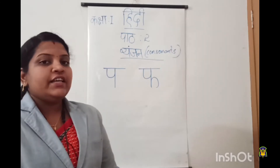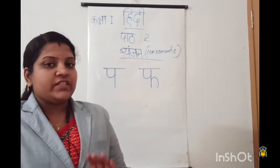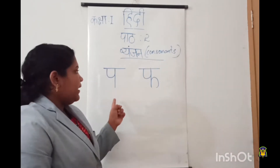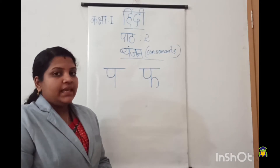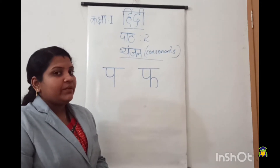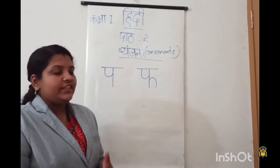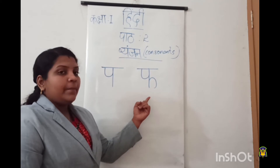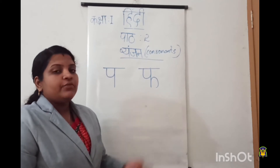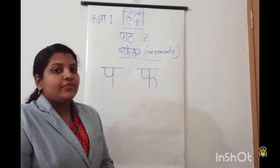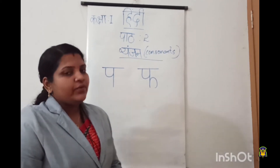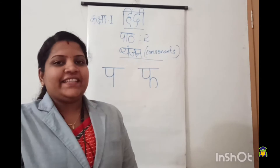So children: fa — say fal. Fal means fruits. Say it louder — fa, say fal, fal means fruits. Okay children, so the first letter of pa work is pa. Pa, pa, pa — say patang. Patang means kite. Then the next letter is fa. Fa, fa, fa — say fal. Fal means fruits. Yes!